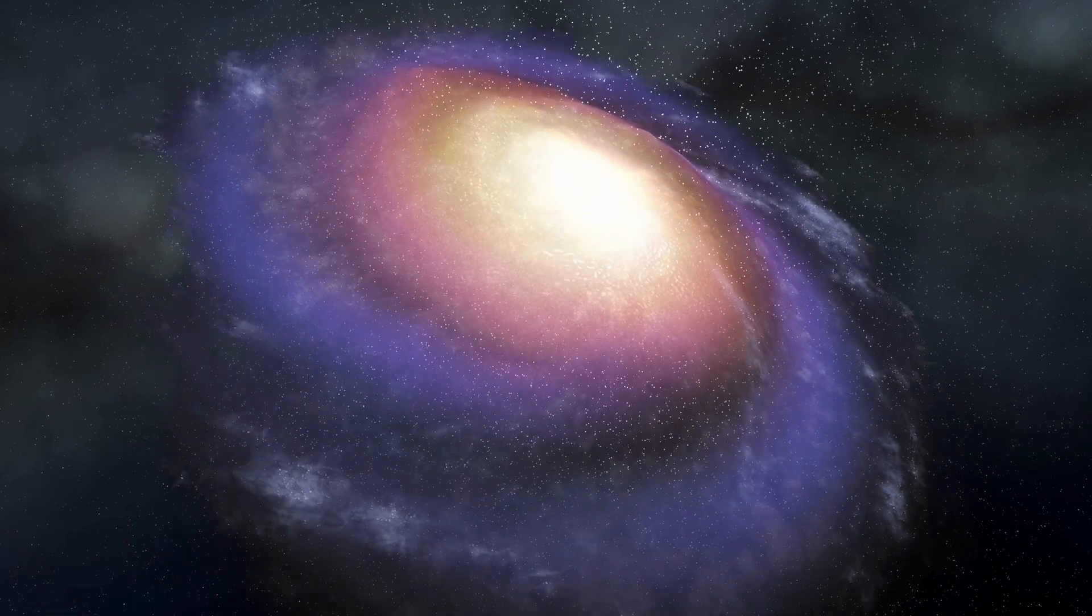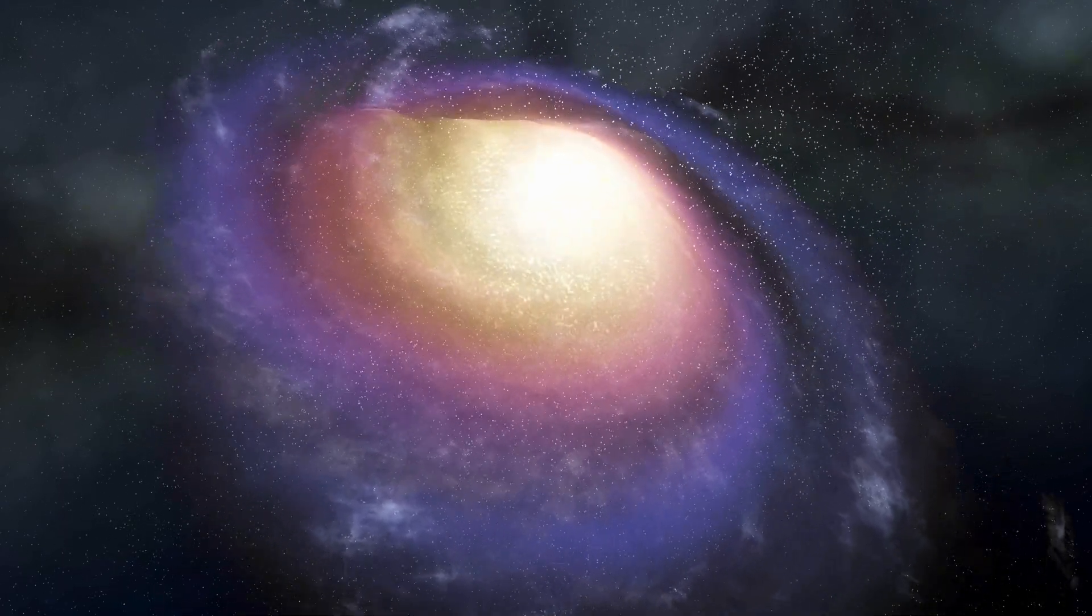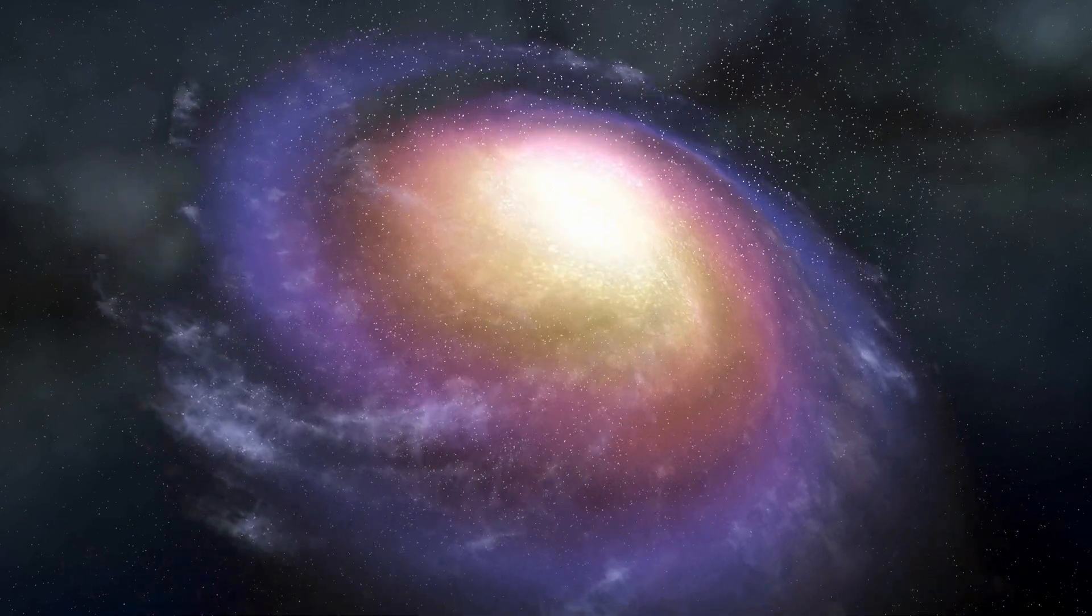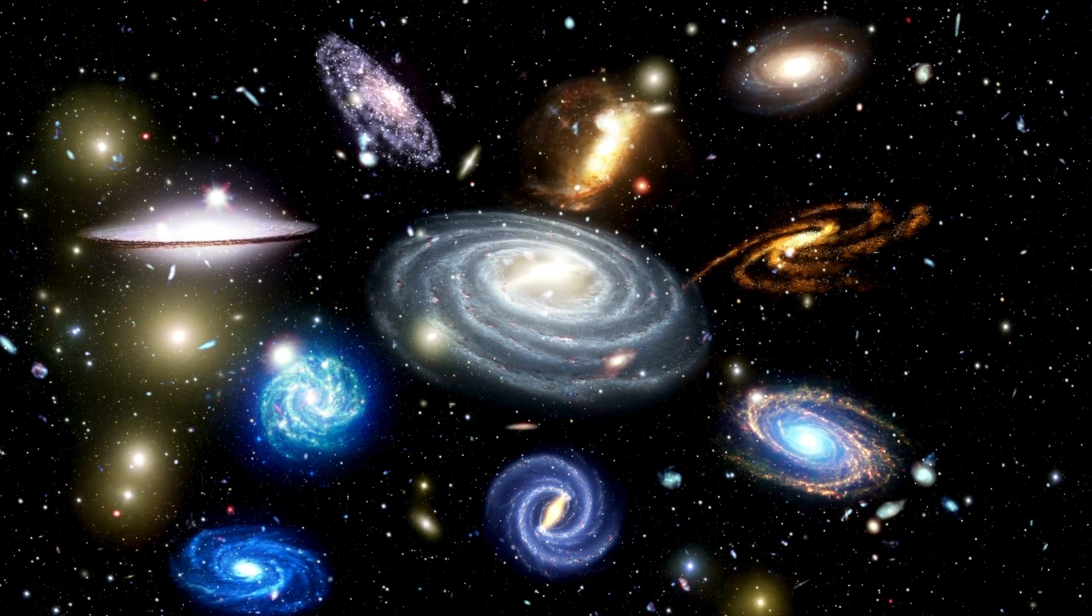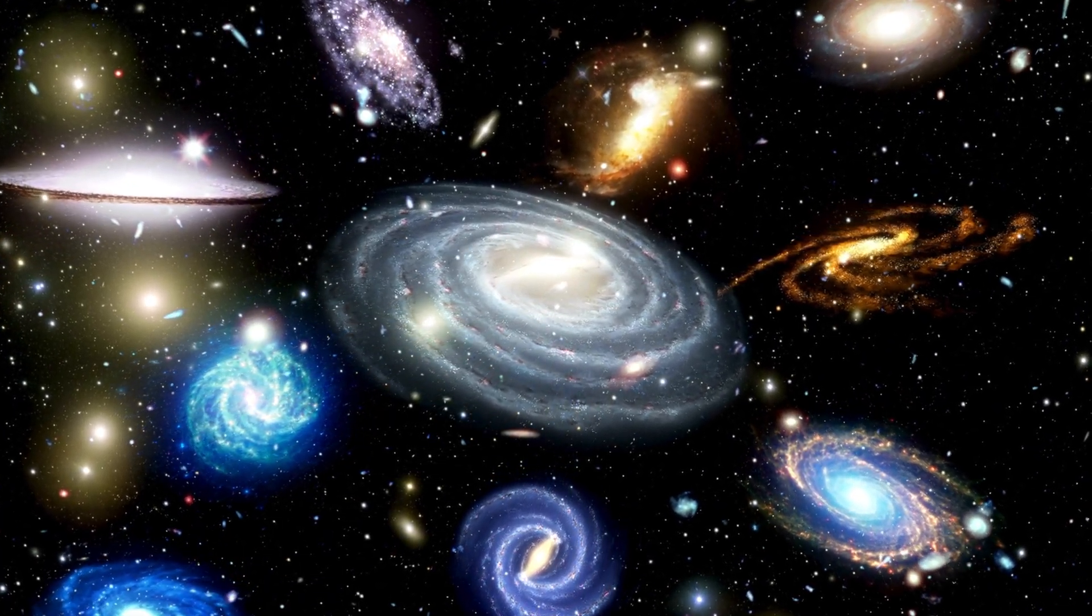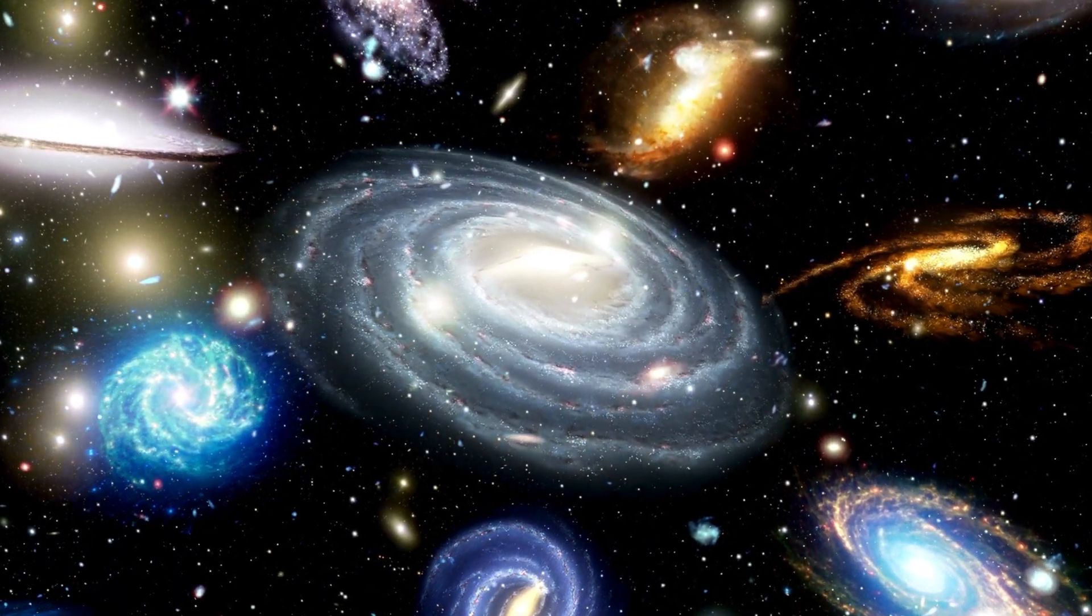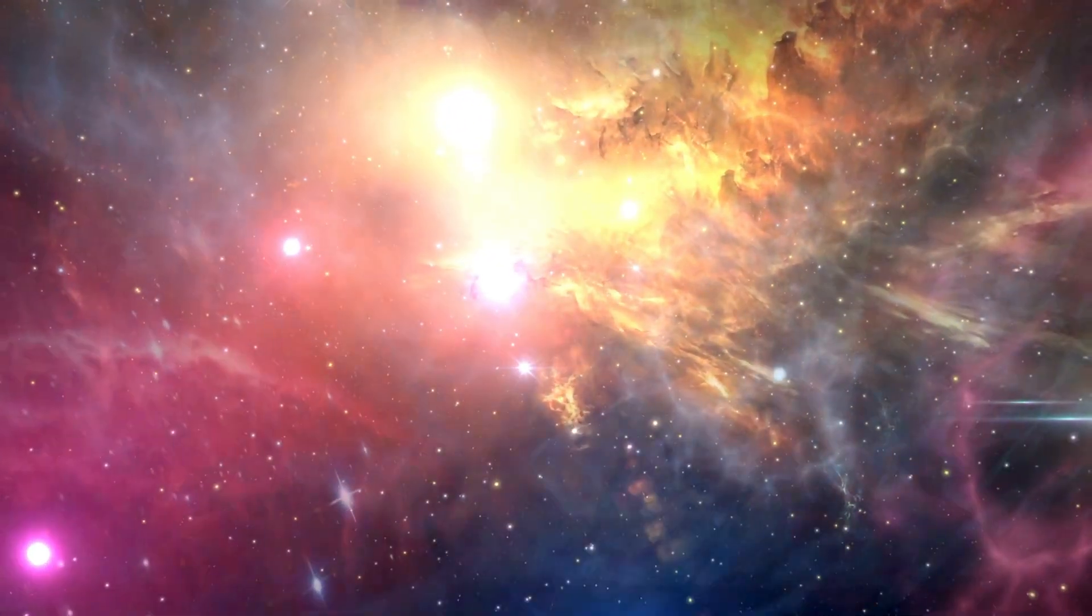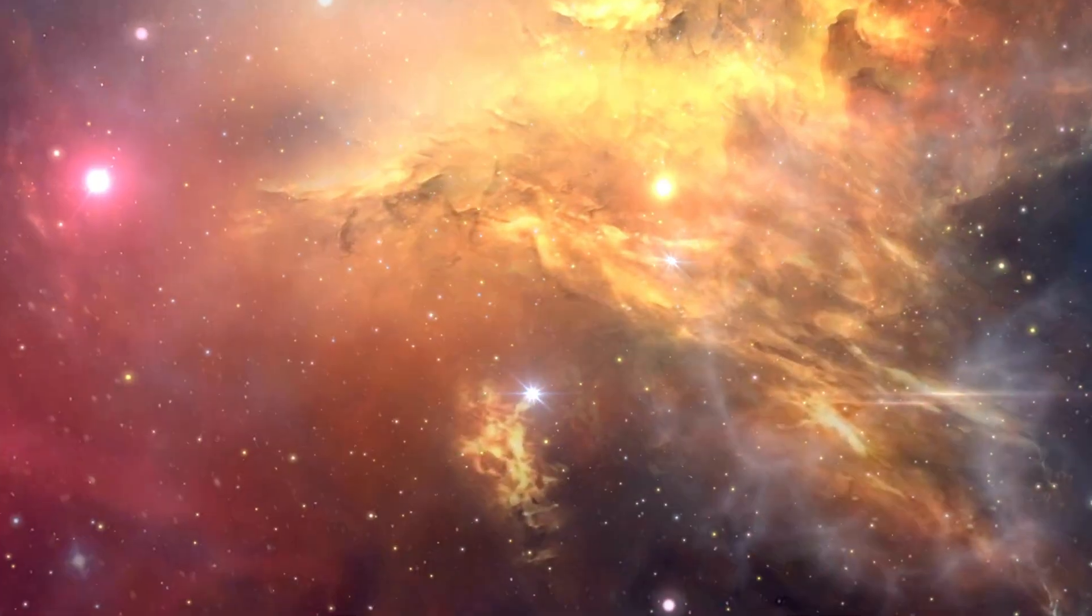As more stars were born, gravity also pulled them together into larger structures. Over time, these groups of stars grew into the first galaxies: vast collections of stars, gas, and dark matter, spinning through space. Galaxies became the building blocks of the universe, giving it structure and forming the environment where stars and planets, like our own, would later develop. The universe was no longer dark. Light from the first stars and galaxies filled the cosmos, marking the end of the dark ages and the beginning of the universe as we see it today.